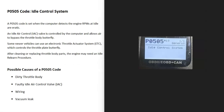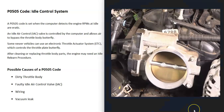Today I'm talking about a P0505 code — what it is and how you go about fixing it. A P0505 code relates to the idle control system. Fuel injected vehicles have what's called a throttle body, which is basically where all the air goes into the engine.